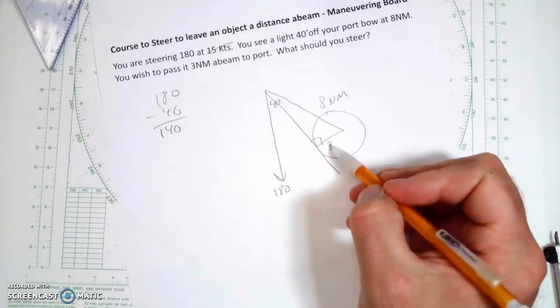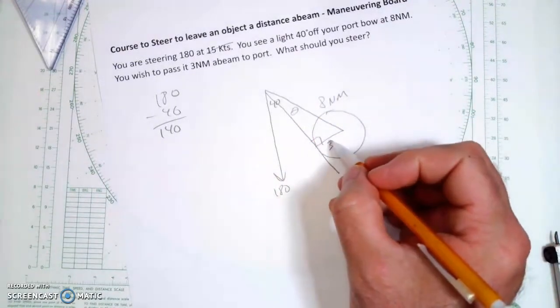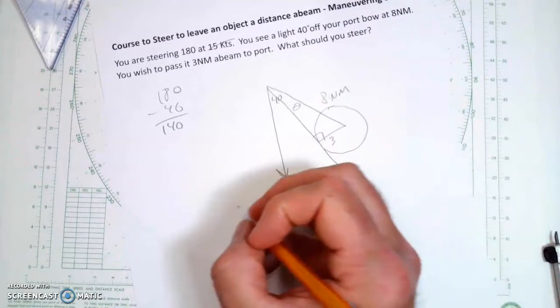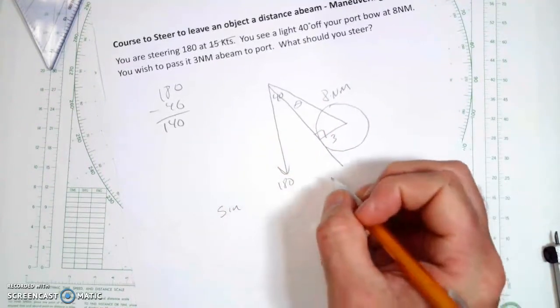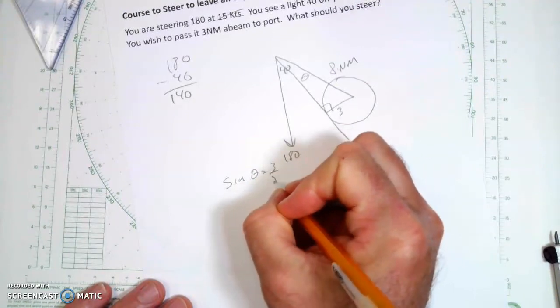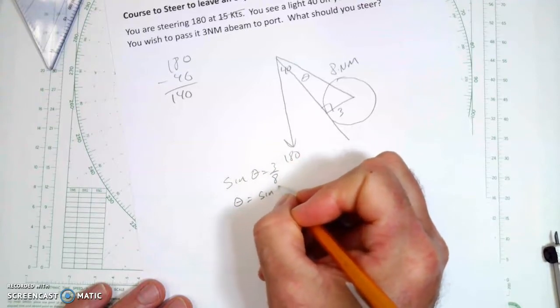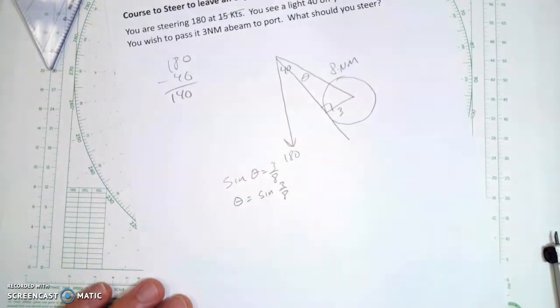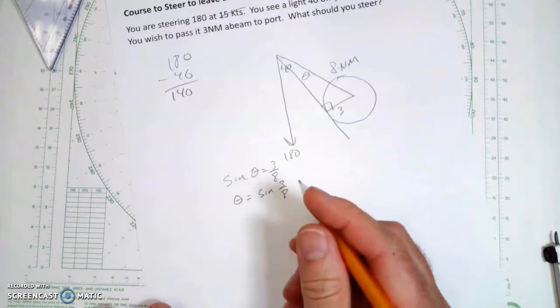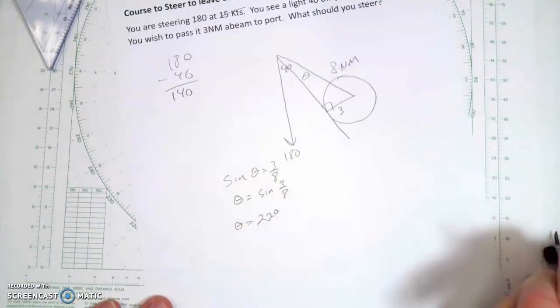So what I have is a right triangle, and I want to know what this angle is here, theta. So here's opposite, there's hypotenuse. So sine of theta is opposite 3 over 8. So theta is inverse sine of 3 over 8. And when I do that, I'm going to get that theta equals 22 degrees.